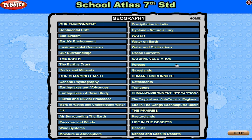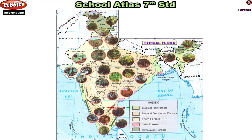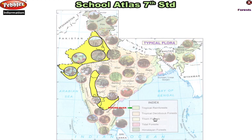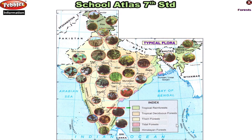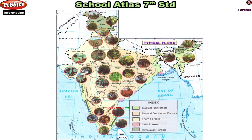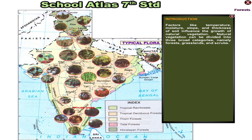Geography. Factors like temperature, moisture, slope and thickness of soil influence the growth of natural vegetation. Natural vegetation can be divided into three broad categories: namely forest, grasslands and scrubs.